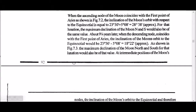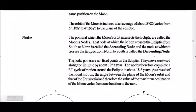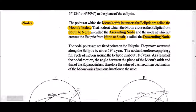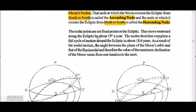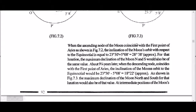Ascending and descending nodes — the points at which the Moon's orbit intersects the ecliptic are called the Moon's nodes. The node at which the Moon crosses the ecliptic from south to north is the ascending node, since it is increasing in latitude. North to south is the descending node. The nodes are not fixed — they move westerly in the ecliptic at 9 degrees per year, completing a full cycle in 18.6 years.